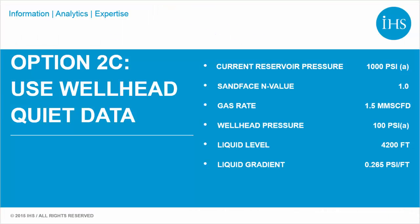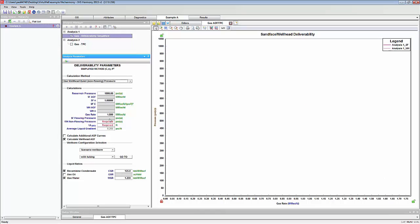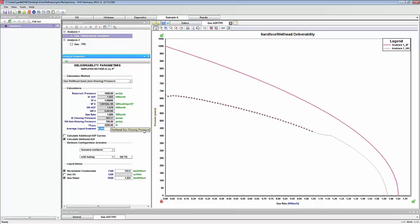The final method is to use the non-flowing pressure. Also called the quiet side pressure, this is the pressure measured on the non-flowing side. For example, if you are flowing the well up the tubing and measuring pressure on the casing side, then the casing well head pressure would be considered the quiet side pressure. With this method, we also need a liquid level and a liquid gradient. Again, use the dropdown to navigate to well head quiet non-flowing pressure and enter in the data. Like the previous method, this method also requires a wellbore and so it turns on the calculate well head AOF option automatically.